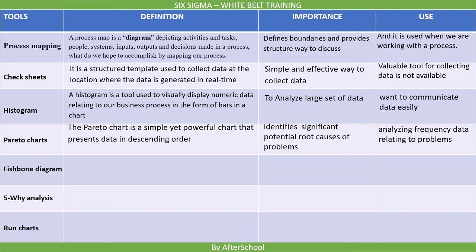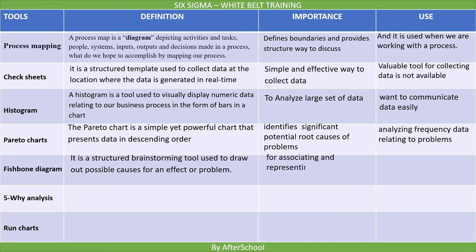The fifth tool is Fishbone Diagram. It is a structured brainstorming tool used to draw out possible causes for an effect or problem. It is important for associating and representing causes for an effect of the problem in one diagram. It is used to identify possible causes for an effect.